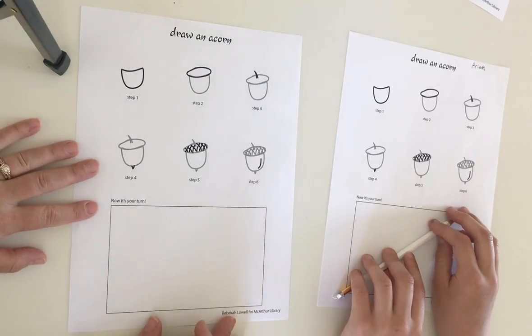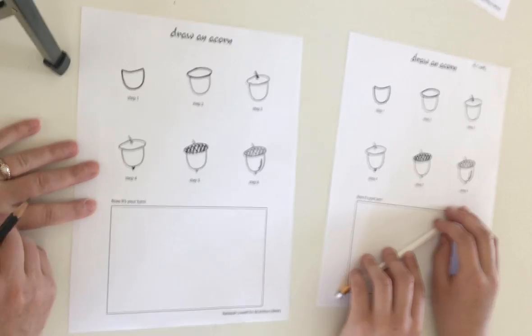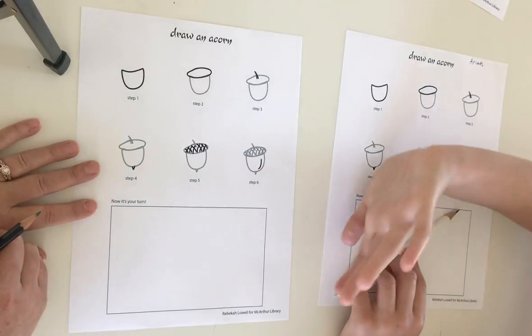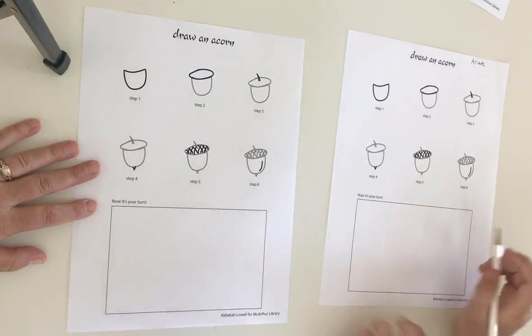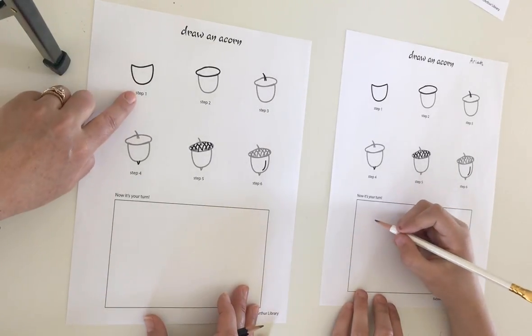Hey everyone, it's Rebecca with MacArthur Library. Hi, this is Aria with me today. She's going to be helping me show you how to draw an acorn. So your first step, step one.